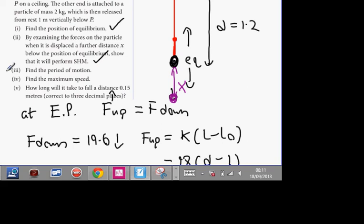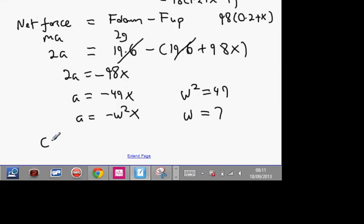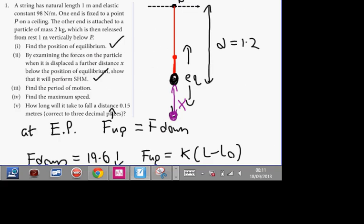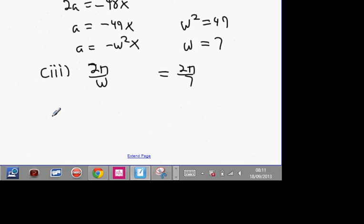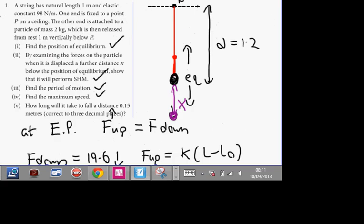Find the period of the motion. Period of the motion is 2 pi over omega, which is 2 pi over 7. So that's the period of the motion. Find its maximum speed. Maximum speed is V equals omega A. V equals omega A. We know that omega is 7, but what is A? So we've got to go back up and figure out what A is from our information.